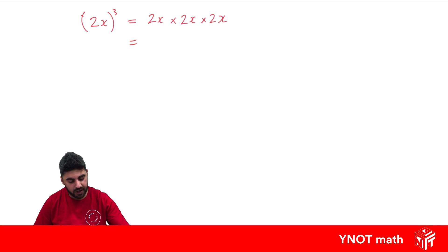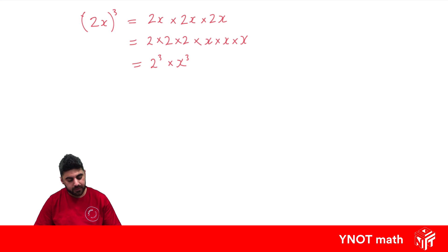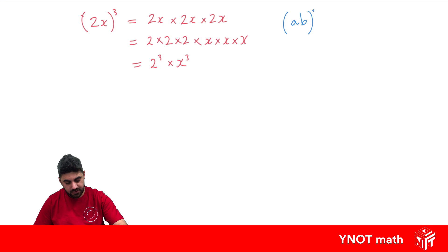Another way to write this — because it's multiplication, it doesn't matter in the order which you multiply things — we can write 2 times 2 times 2 times x times x times x. And that's going to be 2 cubed times x cubed. So we can see what happens: whenever we have more than one term to a power, every term inside goes to that power. We can generalize this by saying if we have (ab) to the power of m, it's going to be a to the power of m times b to the power of m.